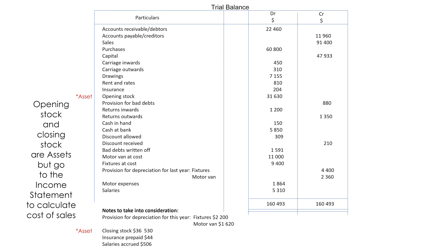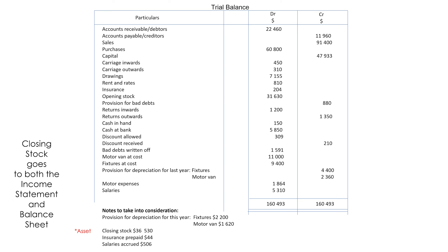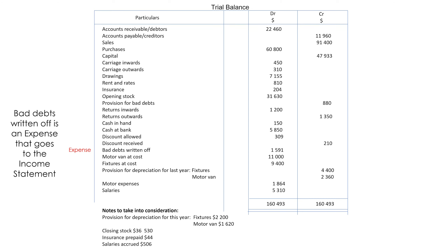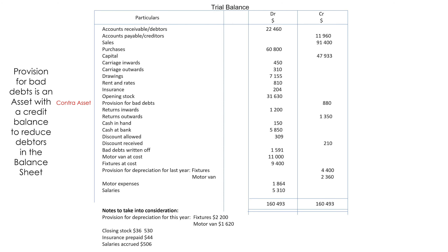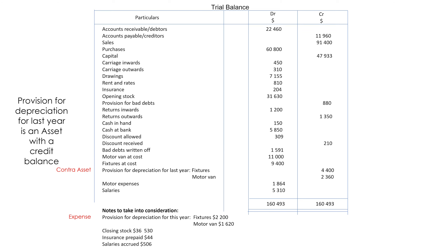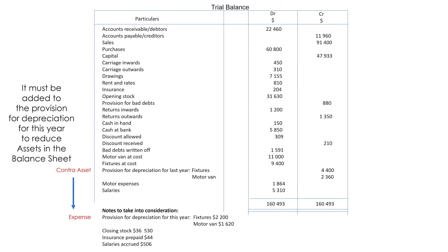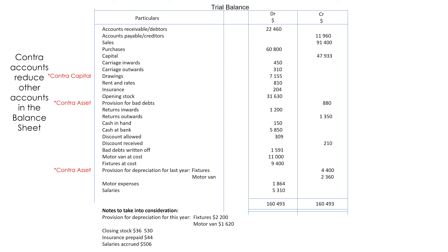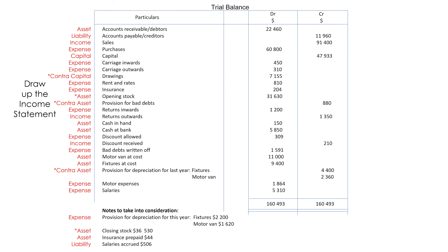Opening stock and closing stock are assets but go to the income statement to calculate cost of sales. Closing stock goes to both the income statement and balance sheet. Bad debts written off is an expense that goes to the income statement. Provision for bad debts is an asset with a credit balance to reduce debtors in the balance sheet. Provision for depreciation for this year is an expense that goes to the income statement. Provision for depreciation for last year is an asset with a credit balance. Contra accounts reduce other accounts in the balance sheet.